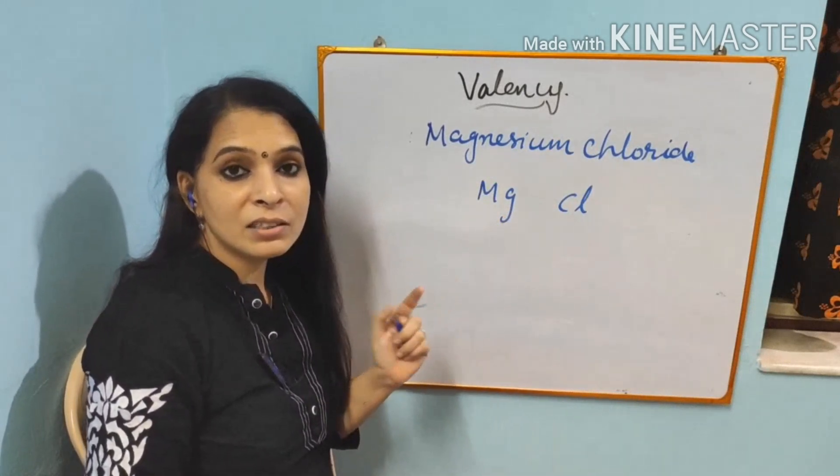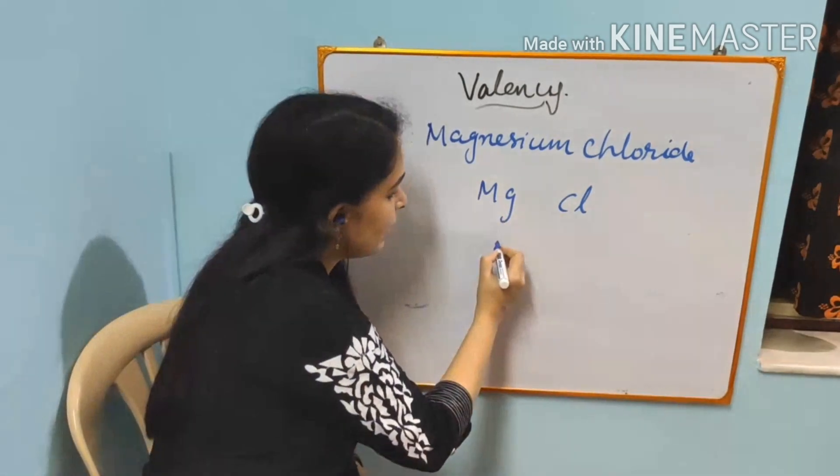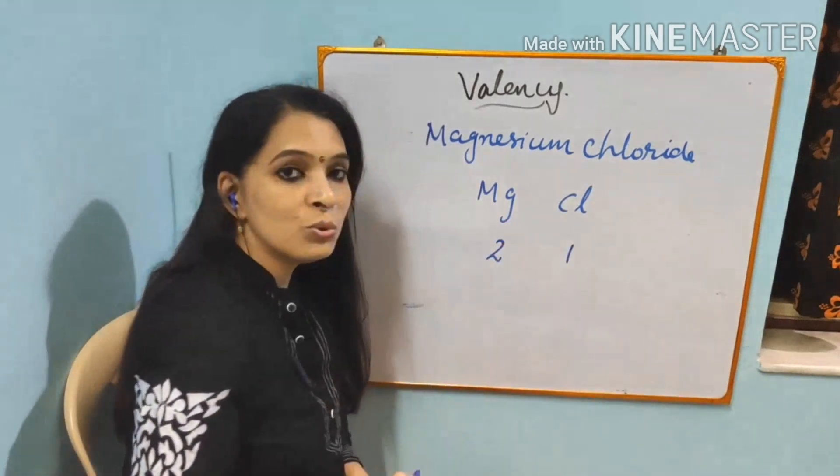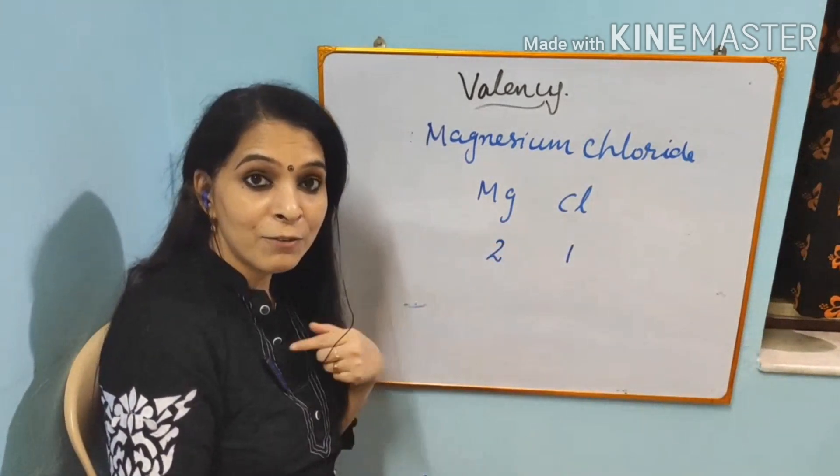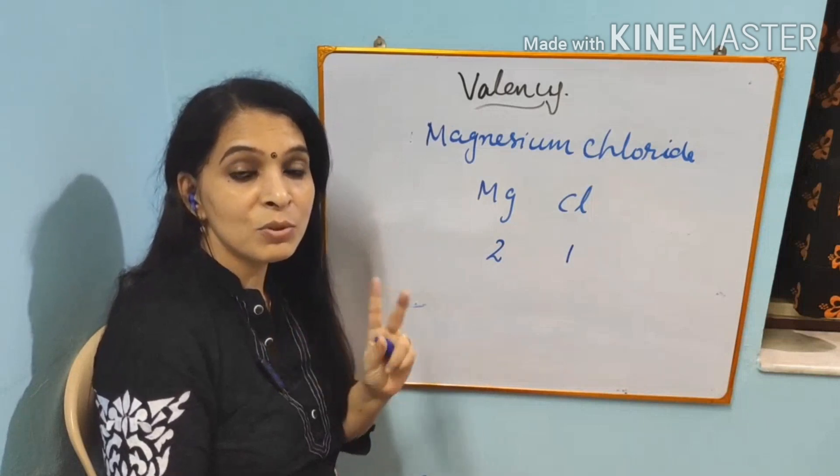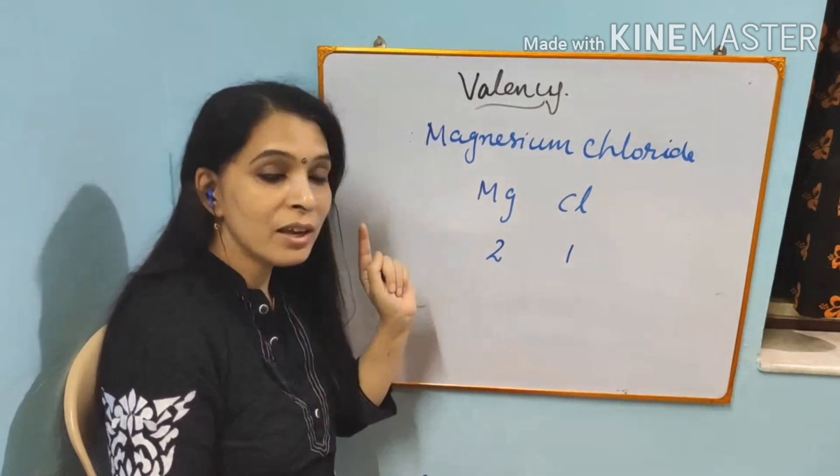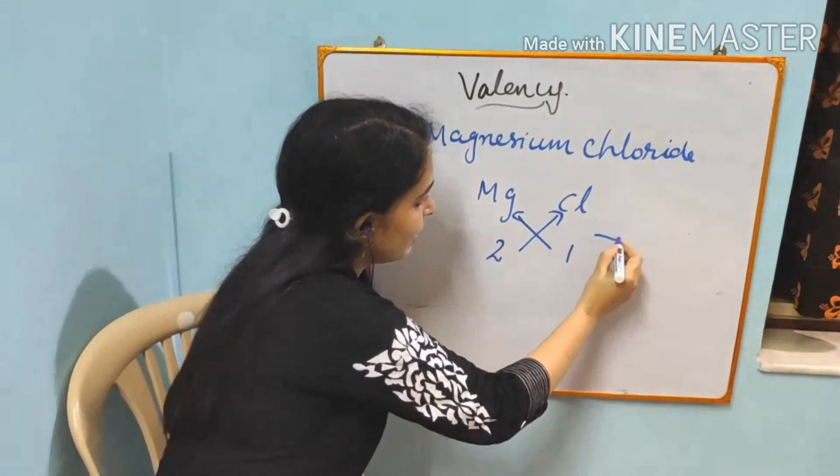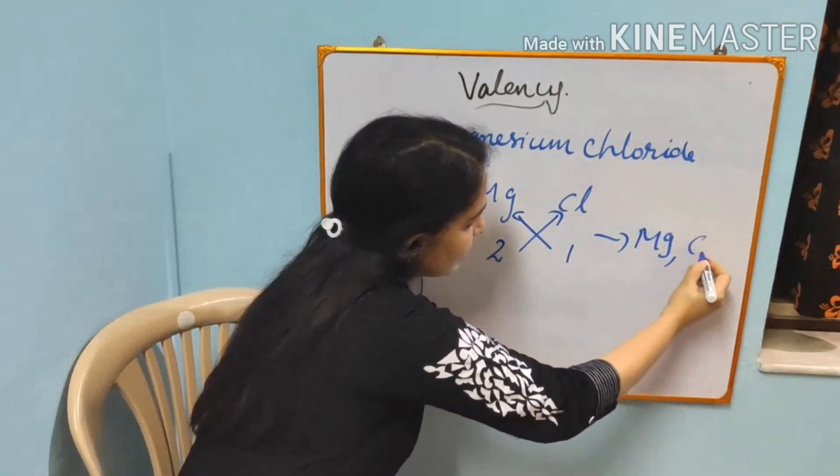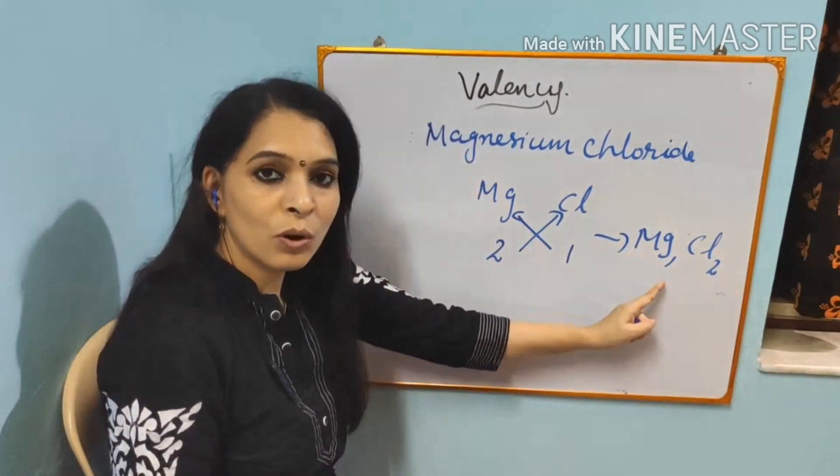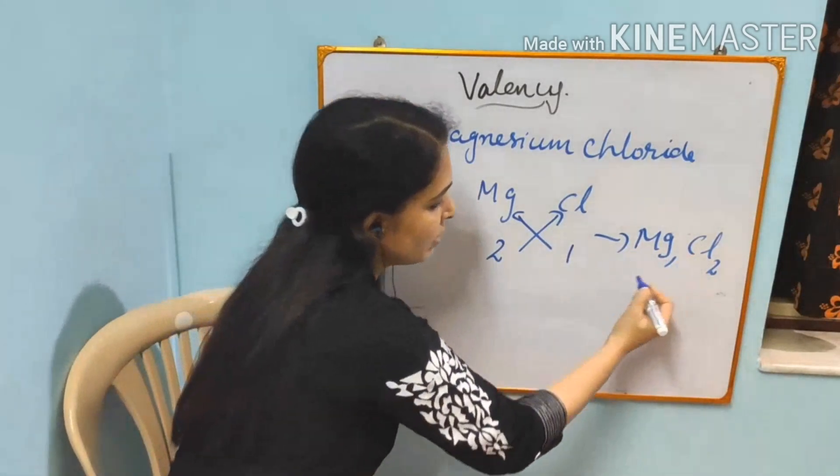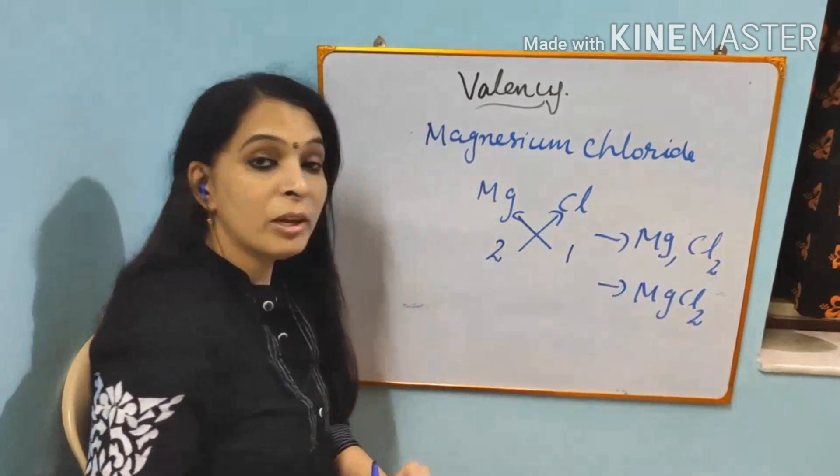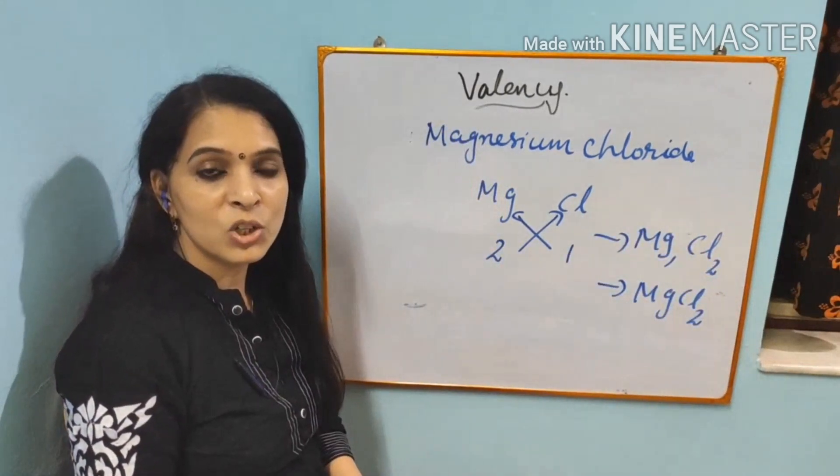Magnesium will ask chlorine, can you be my friend? Chlorine first will ask, what is your valency? Magnesium will tell, my valency is 2. So chlorine will tell, my valency is only 1. So you cannot be my friend, unless you can accept 2 of us. That means magnesium should accept 2 chlorine. When you are criss-crossing it, you will get Mg1Cl2. That means magnesium 1 atom and chlorine 2 atoms. This 1 is not needed. You can write MgCl2. So MgCl2 is the formula of magnesium chloride.